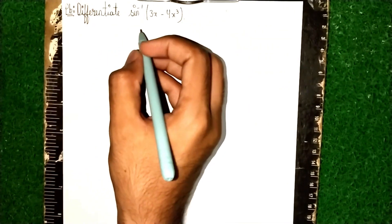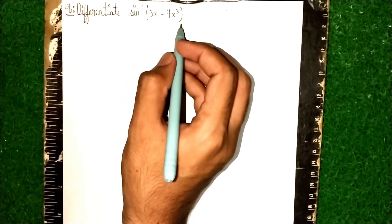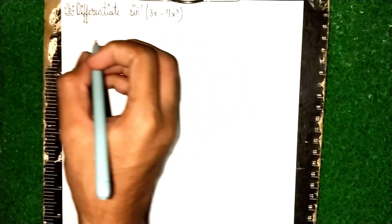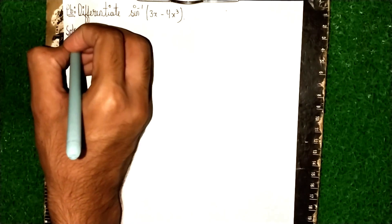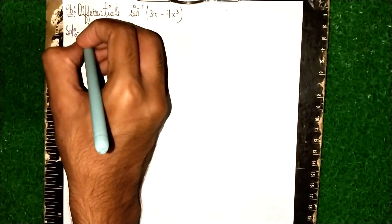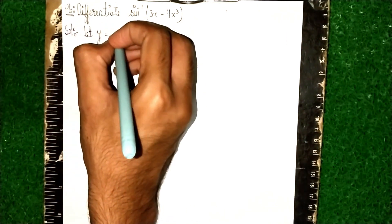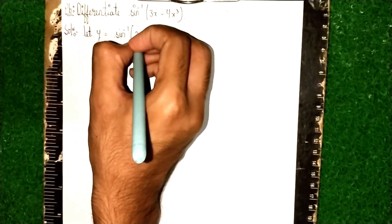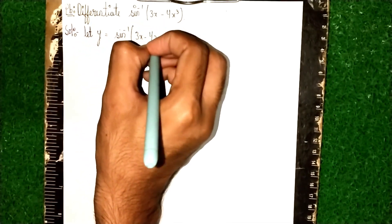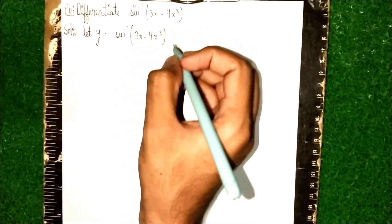Hello and welcome back to my channel. For this differentiation problem, we need to find the derivative of sin⁻¹(3x - 4x³). First, let y be equal to sin⁻¹(3x - 4x³).